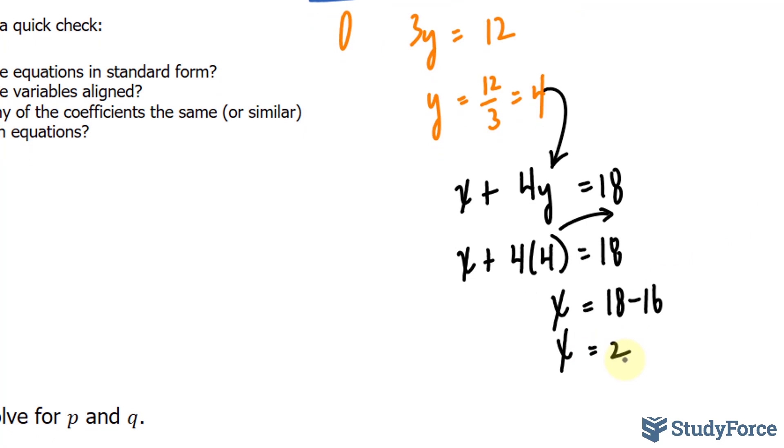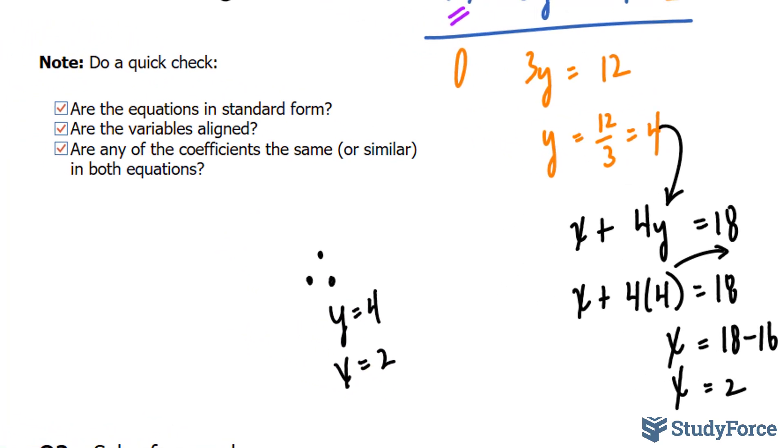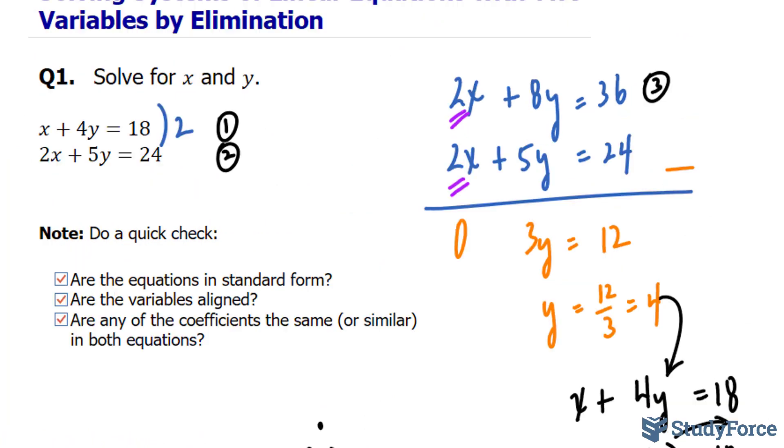And you always want to conclude with a therefore statement. So therefore, y is equal to 4, and x is equal to 2. And again, those two numbers satisfy both equations simultaneously. Let's move on to question number 2.